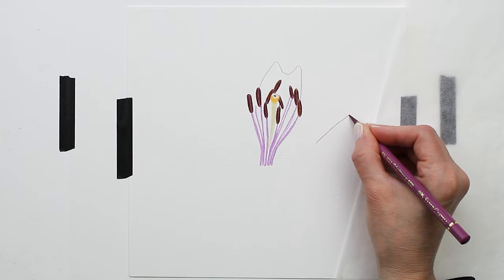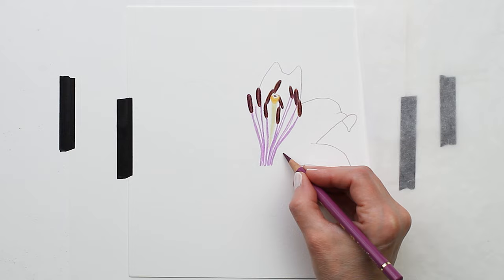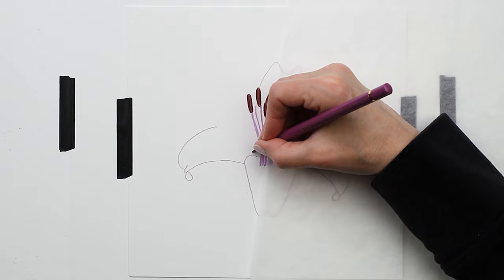Next, I'm starting to work on the petals, and you can see me here using my Polychromos Light Red Violet to outline everything. That just makes it really easy for me to see where all of these petals are going to go.